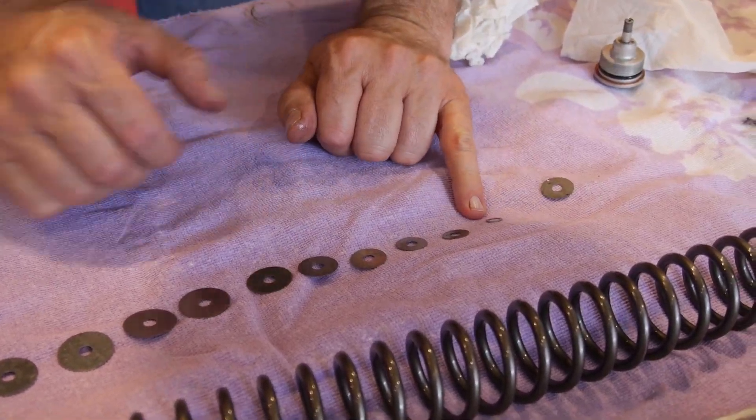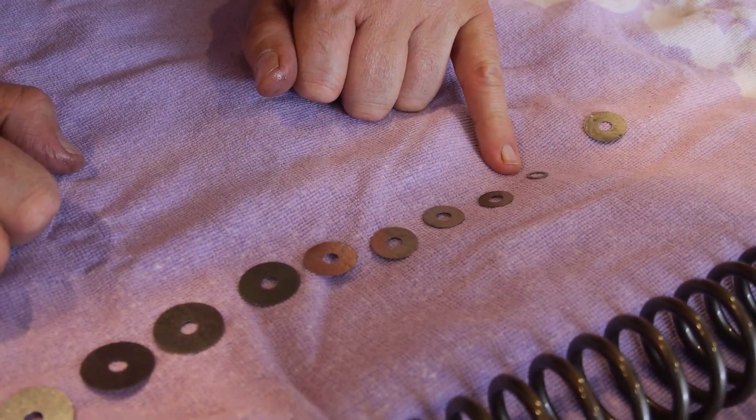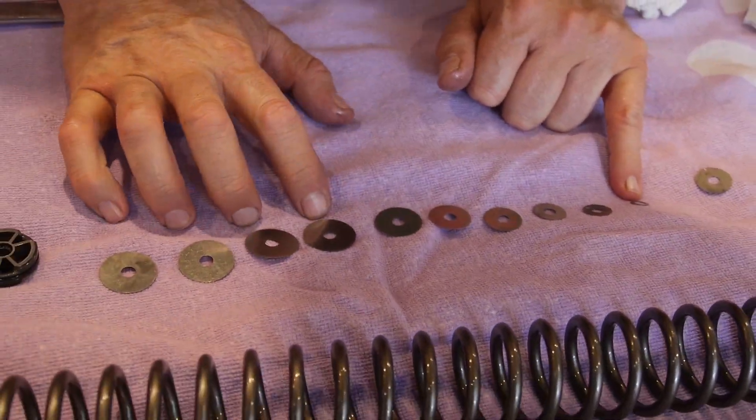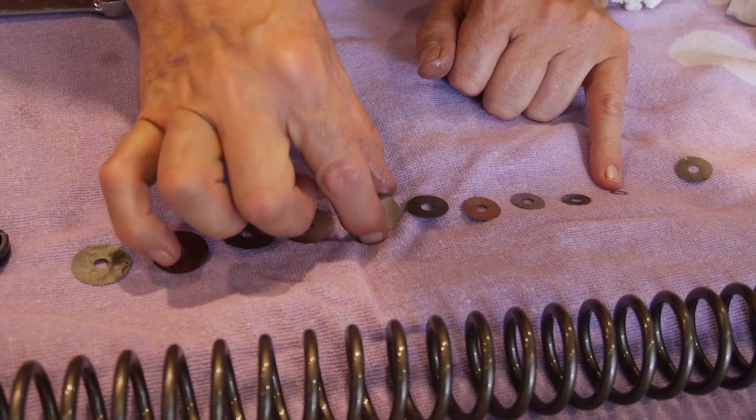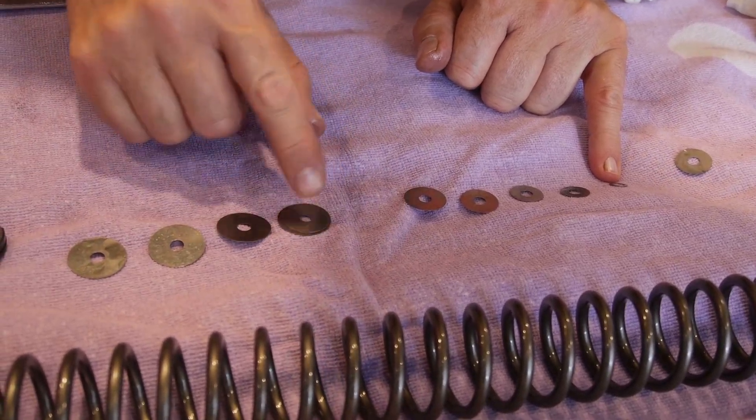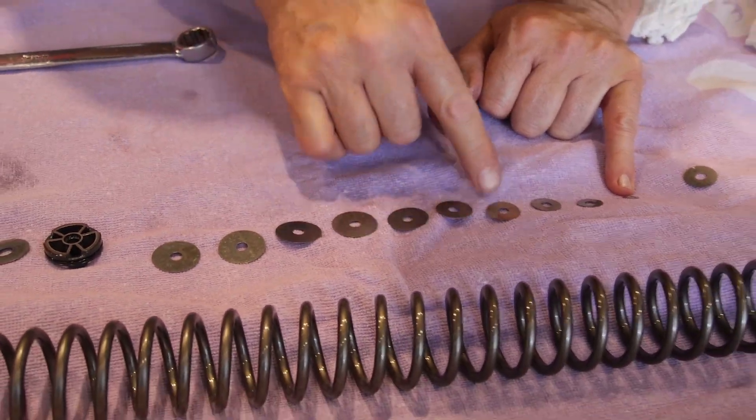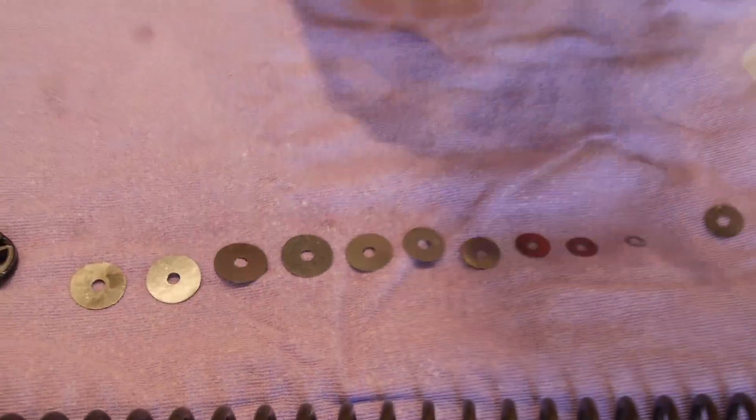And this is the smallest one and that is the end of the shim stacks. You've got one, two, three, four of these larger diameters. Maybe five. Maybe that's slightly smaller. Yeah, slightly smaller. So you've got four low speed compression shims and one, two, three, four, five, six high speed compression shims.